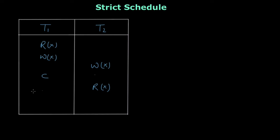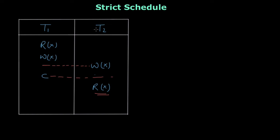In cascadeless, write is allowed. So let's say if we have a situation where we have first read X, then write X, and transaction T1 is not yet committed at this point but transaction T2 is performing a write operation — this is allowed under cascadeless schedule. Write is allowed, but read is only allowed after the commit is done. After this commit, the read is being performed by T2, that's why we say this is a cascadeless schedule.